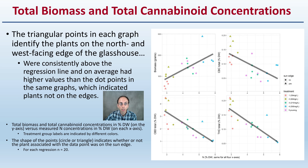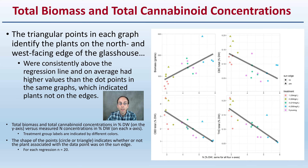There are some correlation lines. The triangular data points identify plants on the north and west-facing edge of the glasshouse where these plants were grown. These were considered above the regression line and on average had higher values than the dot points. The dot points — the circles — indicate plants not on the edges. So the triangle plants were on the sun edge and the circles were not.